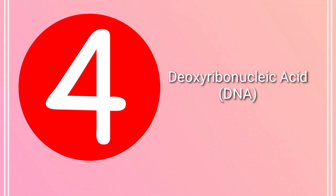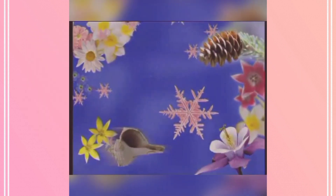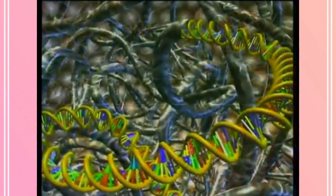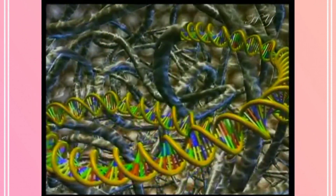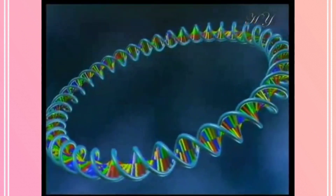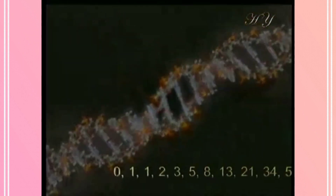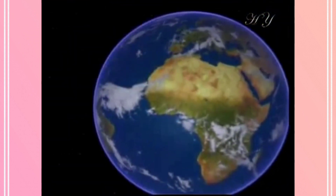Number four: DNA. The DNA molecule, in which all the physical features of living things are stored, has also been created in a form based on the golden ratio. DNA consists of two intertwined perpendicular helixes. The length of each curve is 34 angstroms and the width is 21 angstroms — where one angstrom is one hundred-millionth of a centimeter. Notably, 21 and 34 are two consecutive Fibonacci numbers.